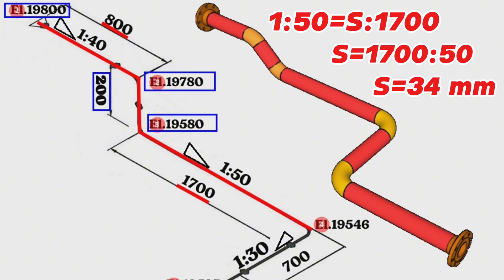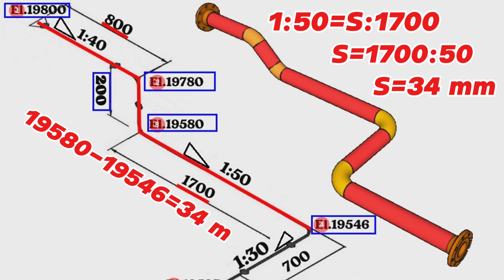Let's check this with a different method using elevation levels. From 19,580 millimeters, which is the height level of the starting point of this part, we subtract 19,546 millimeters, which is the height level of the turn point of the pipeline. 19,580 minus 19,546 equals 34 millimeters. It means the slope of this part of the pipeline over 1,700 millimeters distance is 34 millimeters.